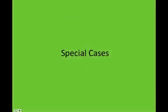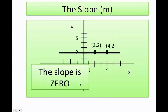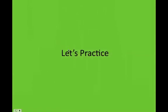Now we're going to have special cases. Anytime you have a vertical line, my slope is going to be undefined. Anytime I have no inclination or a horizontal line, my slope is going to be zero.